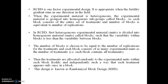In RCBD, the heterogeneous experimental material is divided into homogeneous units called blocks, such that the variability within blocks is less than the variability between blocks. The number of blocks is chosen to be equal to the number of replications for the treatment, and each block consists of as many experimental units as the number of treatments — that is, each block contains all the treatments. Treatments are then allocated randomly to the experimental units within each block, freshly and independently, such that each treatment appears only once in a block. This complete design is called randomized block design.